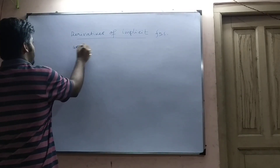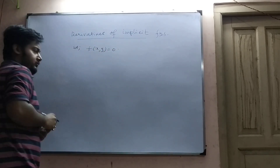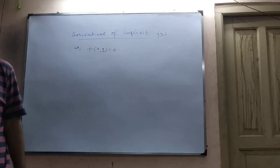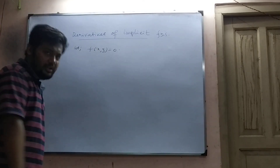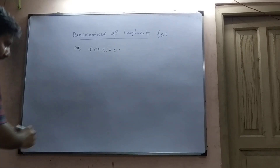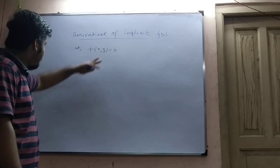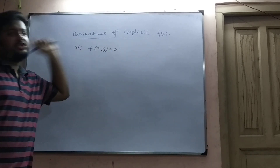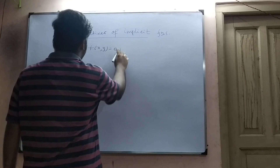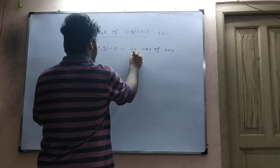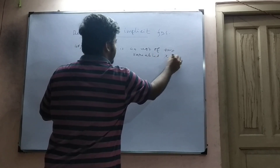Let f of x, y equal to 0. That is a function of x and y. From this function, if x cannot be represented with respect to y, or y cannot be represented with respect to x, then it is an equation of two variables x and y.